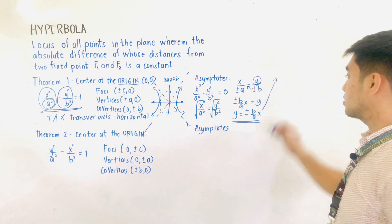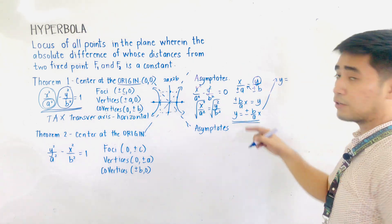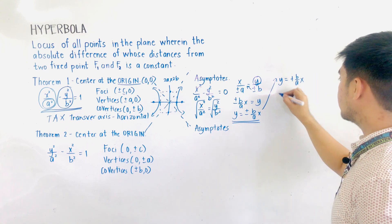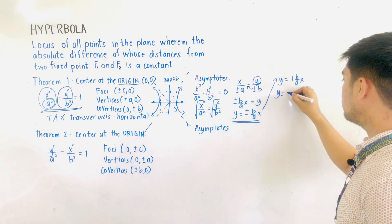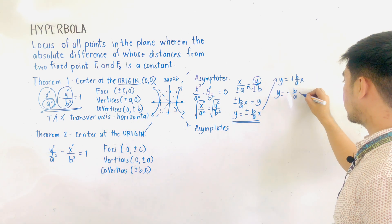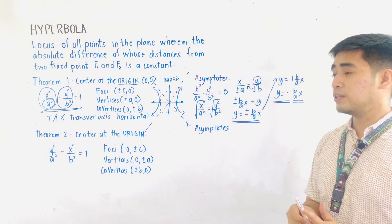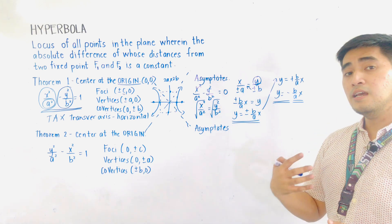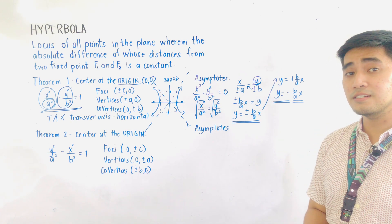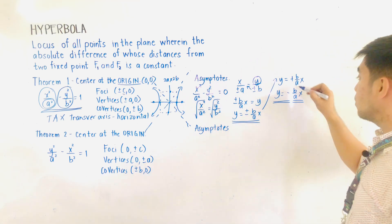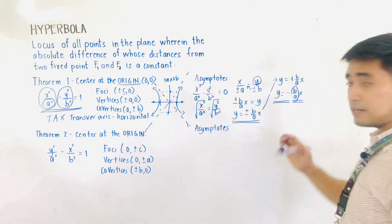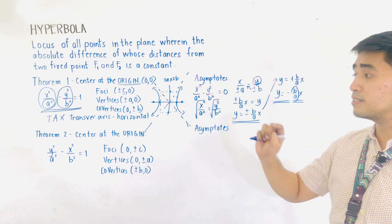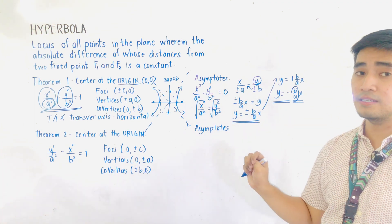So we have two equations of the asymptotes: y = (b/a)x and y = -(b/a)x. Since we are dealing with transverse axis horizontal, remember that the slope of the asymptotes uses b over a. Again, that should be b over a since this is transverse axis horizontal.